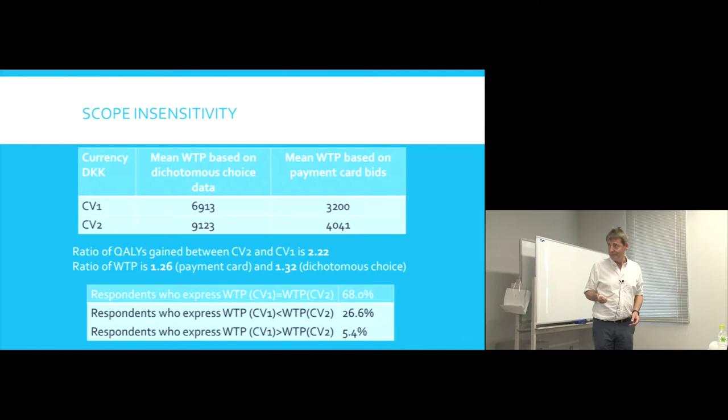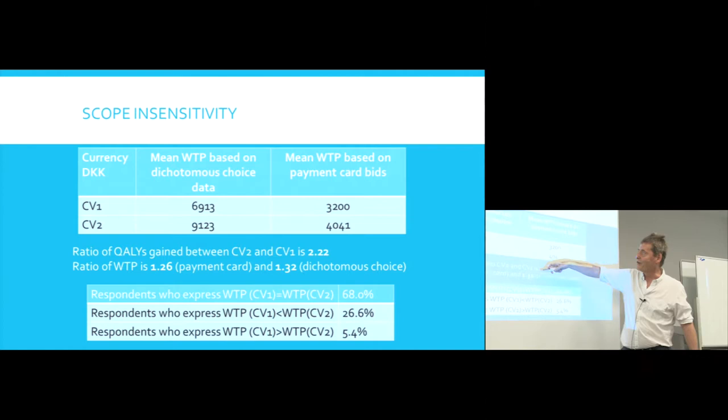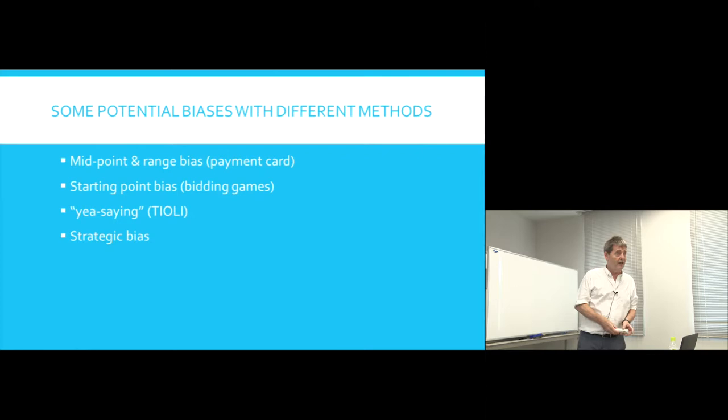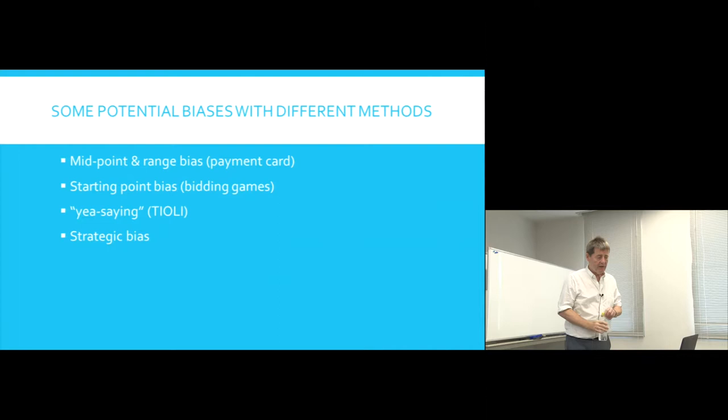The payment card produced rather different results from the dichotomous choice, and we shouldn't be surprised that different methods give different answers — partly because there are different potential biases with each method. The payment card is particularly subject to midpoint bias and range bias. Midpoint bias describes the phenomenon that individuals feel much more comfortable picking a value near the middle and don't like going to the extremes.